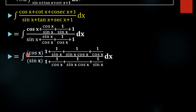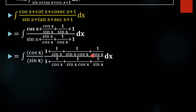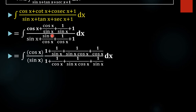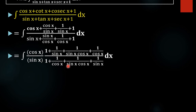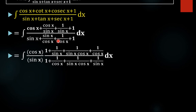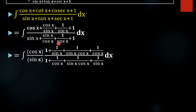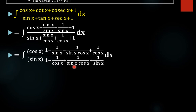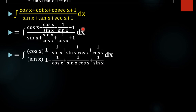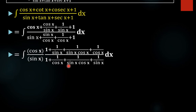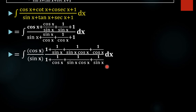Similarly, taking sinx outside from the denominator: 1 remains from sinx, 1/cosx remains from tanx, and treating 1 as sinx/sinx on taking sinx outside leaves 1/sinx remaining.